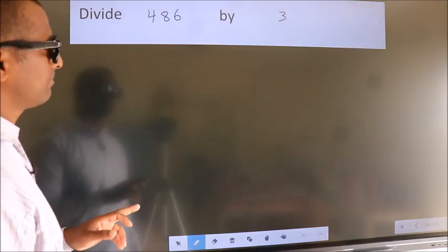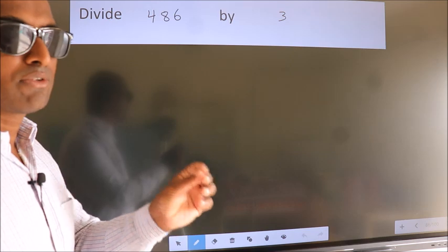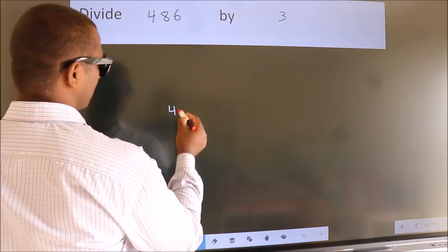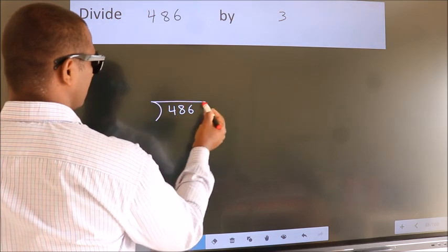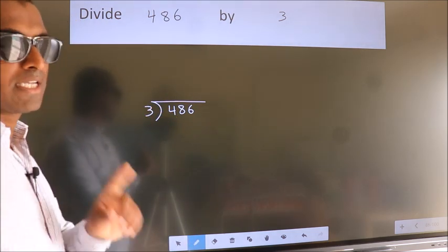Divide 486 by 3. To do this division we should frame it in this way. 486 here, 3 here. This is your step 1.